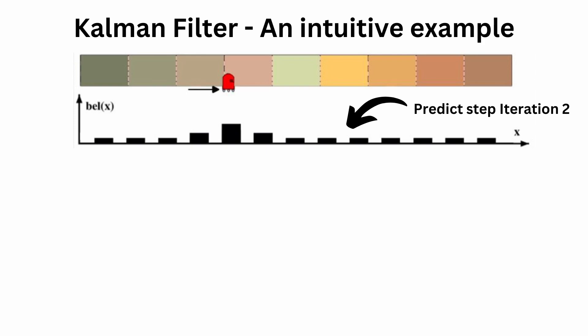You will see the length of these bars reduced because your motion model introduces uncertainty, so the probability distribution looks more flat. In the update step of iteration 2, the robot observes another color. Like in the first iteration, p(z|x) has the red distribution again. Based on the prior from the predict step and the current measurement p(z|x), the current estimate in black has one bar longer than the others — meaning there is one position that is more likely given all observations so far.